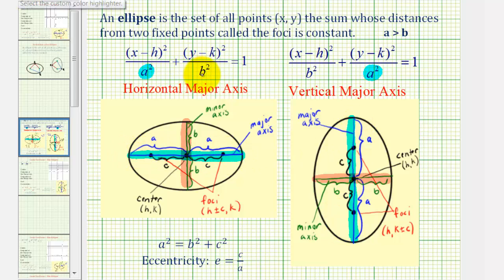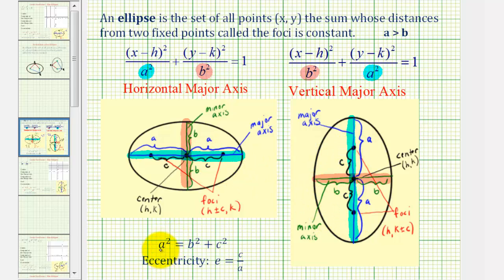The smaller denominator is b squared, where b gives us the distance from the center to the two endpoints of the minor axis. And finally, the distance from the center to the foci is equal to c in both cases, and we can find c using the equation a squared equals b squared plus c squared.